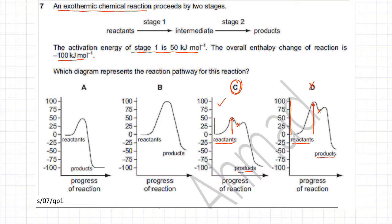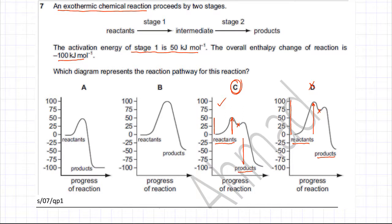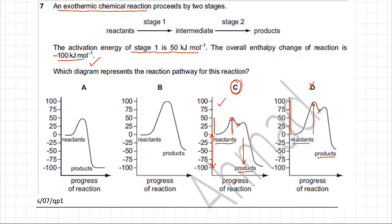To confirm, we check the overall enthalpy change, which is minus 100 kilojoules per mole. Looking at option C, the reactants start at 0 and the products end at minus 100, so the overall enthalpy change is indeed minus 100 kilojoules per mole. Therefore, option C is the correct answer.